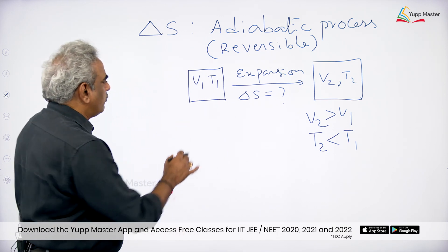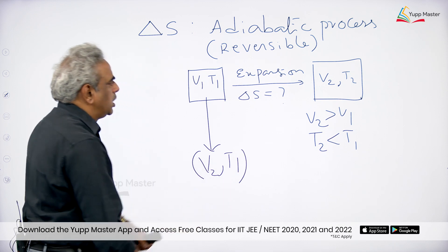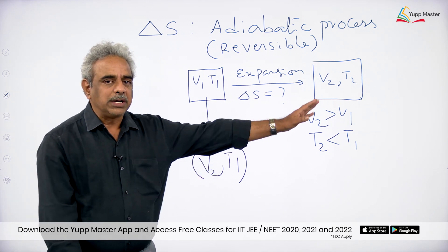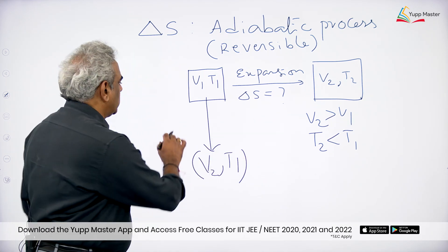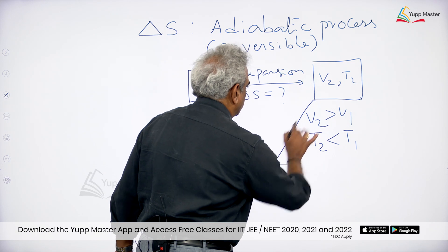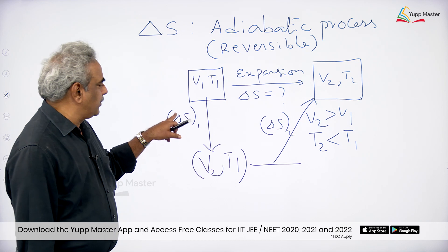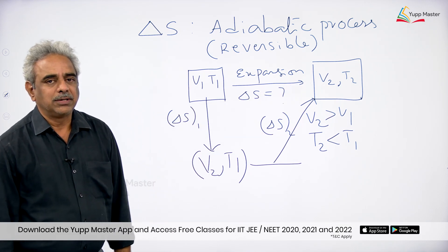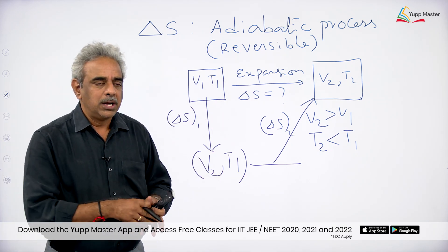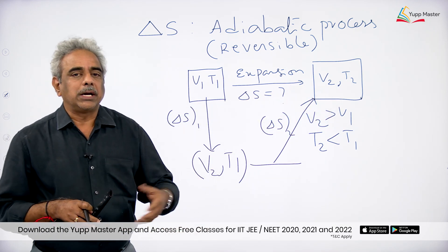I will first convert the state to V2 at T1. Since entropy is a state function, I can split the process into two steps and add them up. The first step, with entropy change ΔS1, is isothermal — volume changes but temperature does not. The second step, with entropy change ΔS2, is isochoric — temperature changes but volume does not. Adding ΔS1 and ΔS2 gives the overall ΔS.